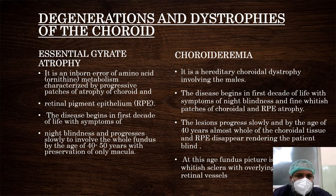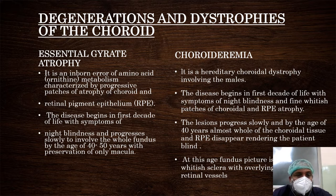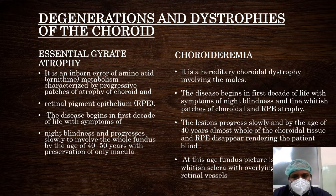Essential gyrate atrophy is important because it is associated with an inborn error of amino acid metabolism — ornithine metabolism — with characteristic progressive patches of atrophy of the choroid and retinal pigment epithelium. This disease begins in the first decade of life with symptoms of night blindness and progresses to involve the whole fundus by age 40 to 50 years, with preservation of only the macula. Choroideremia is a hereditary choroidal dystrophy involving males. The disease begins in the first decade of life with night blindness and patches of choroidal and RPE atrophy. The lesions progress slowly and by age 40 almost all of the choroidal tissue and RPE disappears, leaving a whitish fundus with overlying retinal vessels.